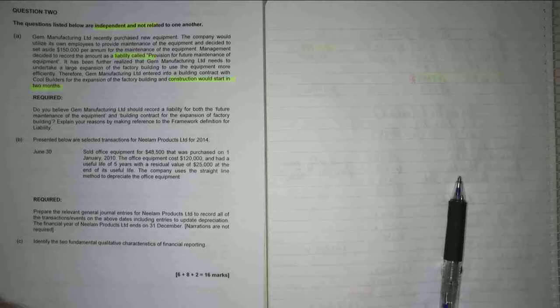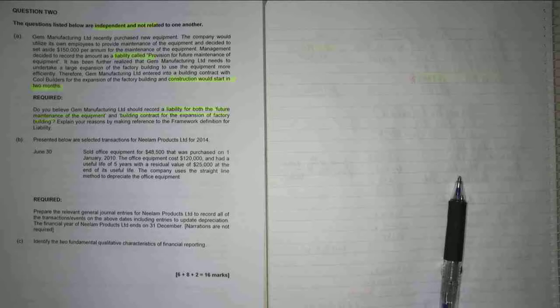Do you believe that Gem Manufacturing should record a liability for future maintenance of equipment and the building contract for the expansion of the factory building? Explain your reasons by reference to the framework definition for a liability. So it tells you now what you've got to provide me.